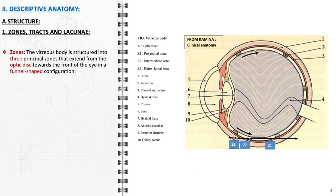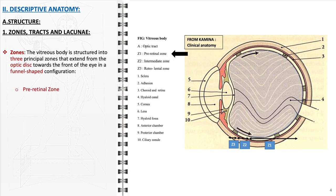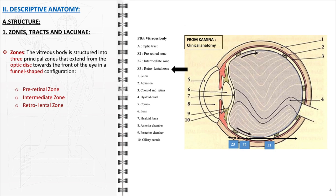The vitreous body, or vitreous humor, is a clear, gel-like substance that occupies the space between the lens and the retina within the eye. Its structure is intricately organized into zones and supported by a network of tracts and lacunae. It is organized into three primary zones: the pre-retinal, intermediate, and retro-lental zones, each with distinct locations and functions.